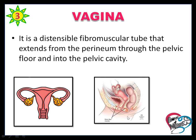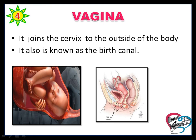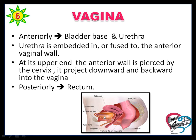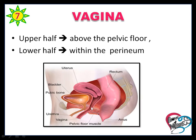The vagina is the distensible fibromuscular tube that extends from the perineum through the pelvic floor and into the pelvic cavity. It joins the cervix to the outside of the body and is also called the birth canal. The measurement of the vagina is 12 cm in length, which is about 3 inches. It extends from the vestibule to the uterus and is situated behind the bladder and in front of the rectum. The urethra is embedded in or fused with the anterior vaginal wall. The upper end of the anterior wall is pierced by the cervix, which projects down and backward into the vagina, and posteriorly the rectum is present.